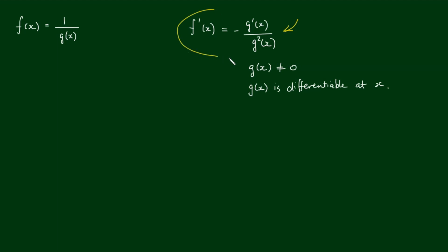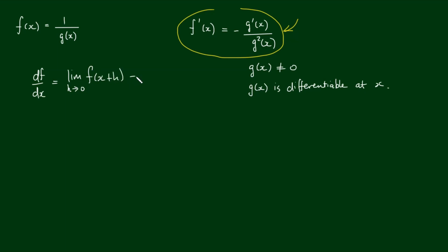But how do we come to this formulation? That's what we're going to prove in this video, and to prove it, I'm going to use the definition of the derivative. So we have df dx is equal to, by the definition of the derivative, the limit as h approaches 0 of f of x plus h minus f of x over h. In our case, we want the derivative of 1 over g of x.